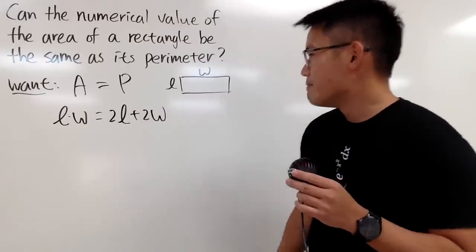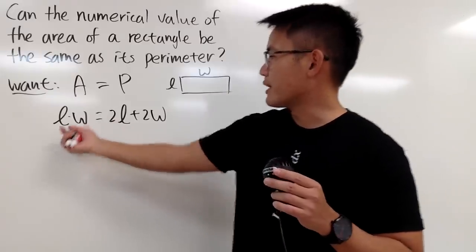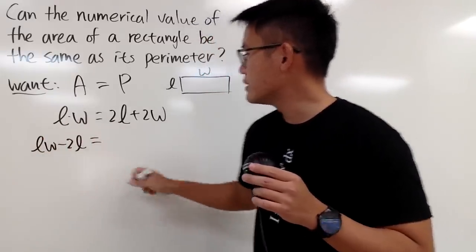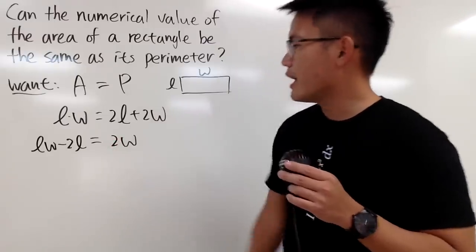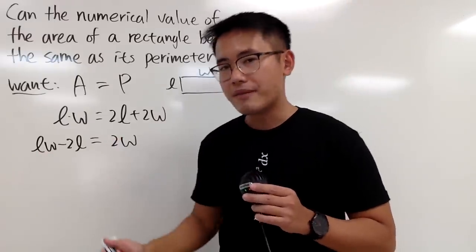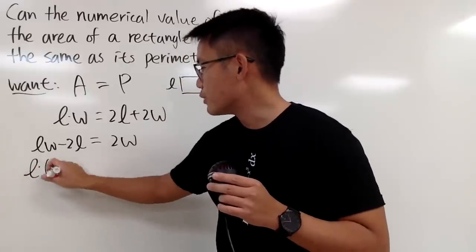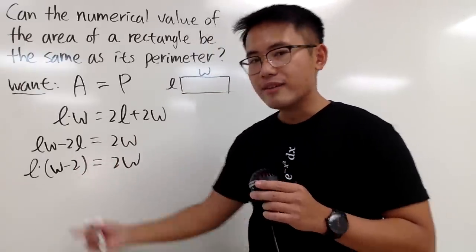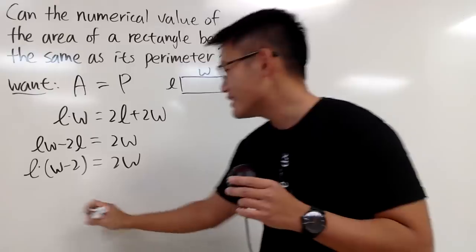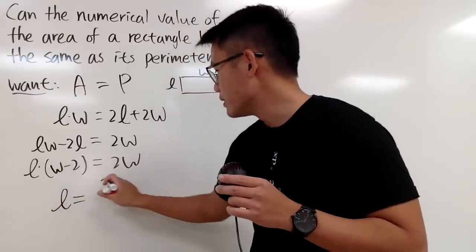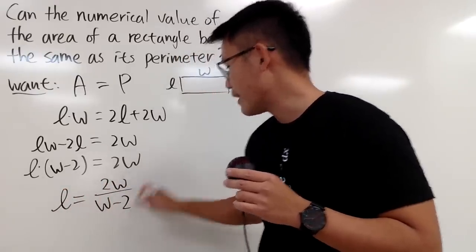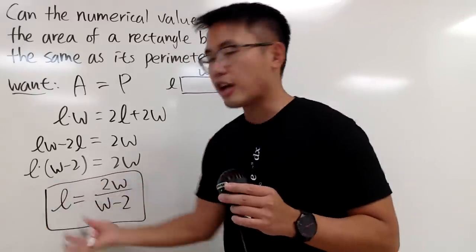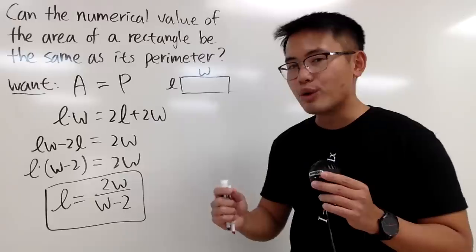This is how we can approach it. Maybe you can move this to the other side so we get lw minus 2l equals 2w. Both terms have l so you can factor out the l times the rest, which is w minus 2, to be 2w. You can divide this on both sides so we get l equals 2w over w minus 2. Therefore this is the connection that we want in order to have the same area and perimeter.